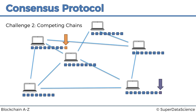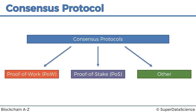In terms of consensus protocols, it's important to note that there are multiple different types. At the end of this tutorial I'll recommend an article highlighting a few of them. The two most famous ones are Proof of Work (PoW) and Proof of Stake (PoS). The one we're going to talk about is Proof of Work — the original one described by Satoshi Nakamoto in his paper, and the one Bitcoin currently uses. Ethereum also still uses it, even though they're planning to move to Proof of Stake.